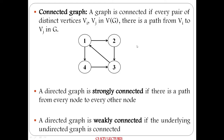Next, connected graph. A directed graph is strongly connected if there is a path from every node to every other node. A directed graph is weakly connected if there is a path between all pairs of vertices when the direction of edges is ignored — that is, treating the directed graph as an undirected graph. That type of graph is a weakly connected graph.